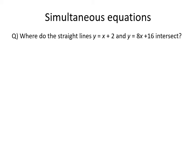Really, simultaneous equations are asking where two straight lines intersect — at what point in two-dimensional space are both X and Y in the two equations equal. At that point, if they're equal, the lines are going to intersect.